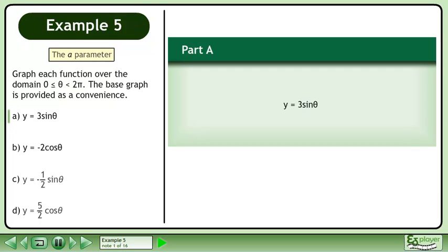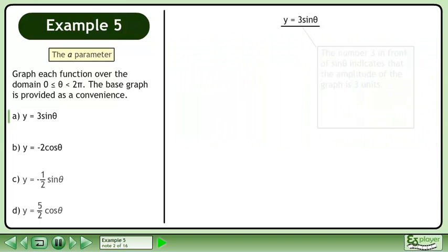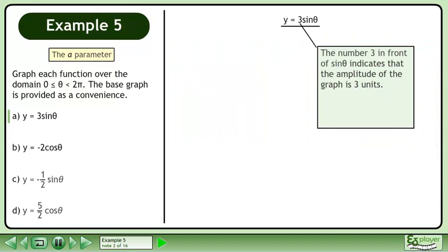In part A, we'll draw the graph of y equals 3 sine θ. The number 3 in front of sine θ indicates that the amplitude of the graph is 3 units. It can also be thought of as a vertical stretch applied to the graph of y equals sine θ.